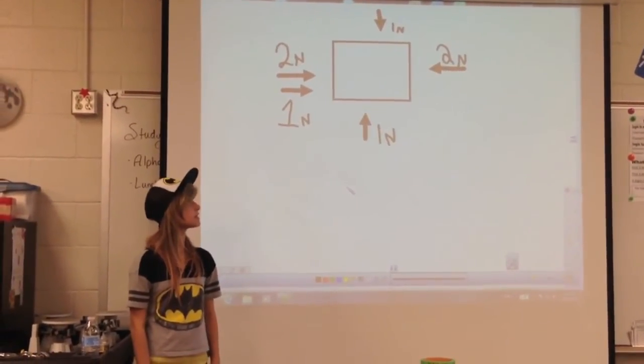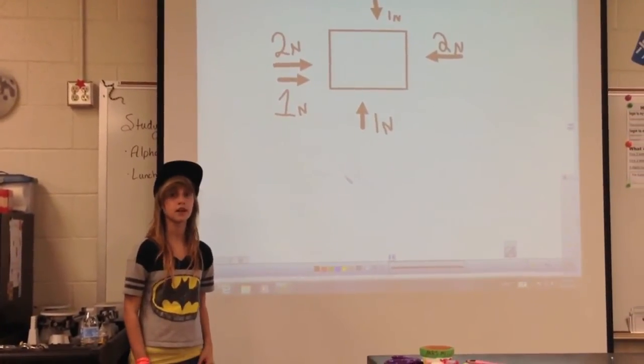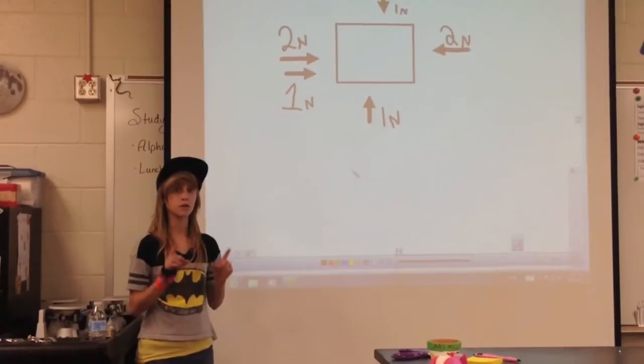And then, we also have one newton going down and one newton going up. Since they are both one newton, they cancel each other out, making the box not move up or down.